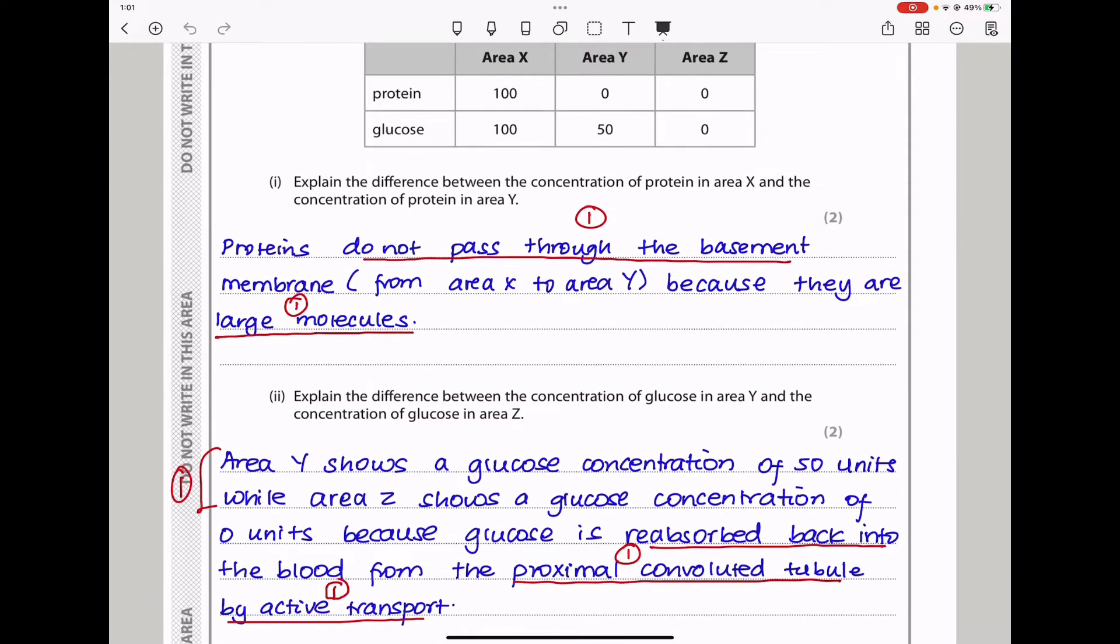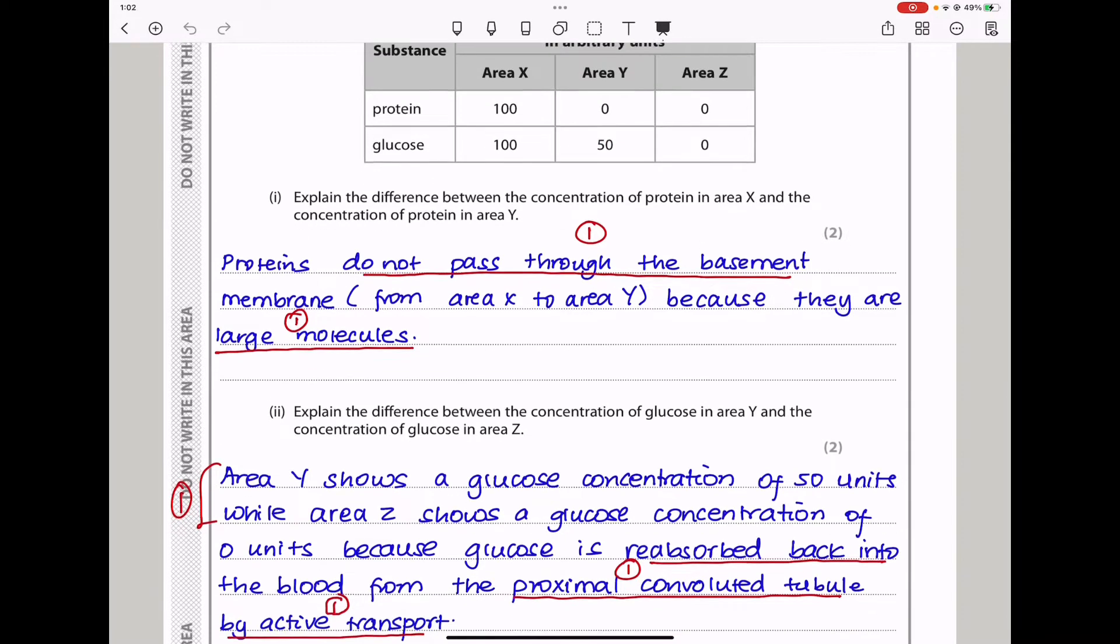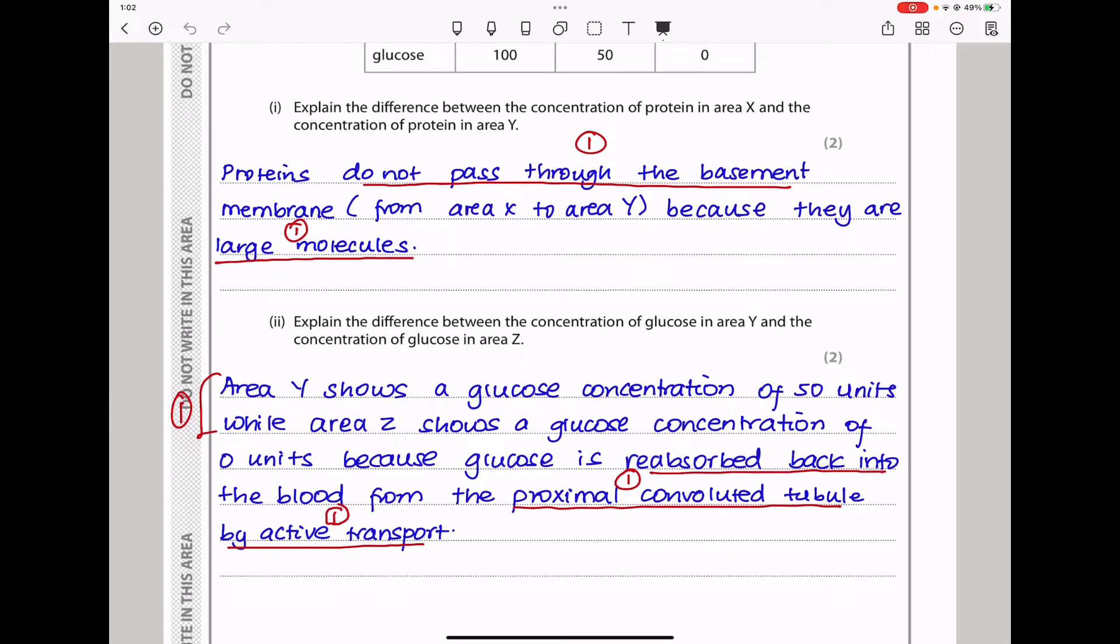The next part says explain the difference between the concentration of glucose in area Y and the concentration of glucose in area Z. Here we have a concentration of 50, but here we have a concentration of 0. The reason for this is because glucose has been reabsorbed by active transport back into the blood. I said area Y shows a glucose concentration of 50 units, while area Z shows a glucose concentration of 0 units, because glucose is reabsorbed back into the blood from the proximal convoluted tubule by active transport.